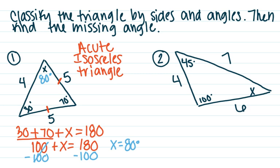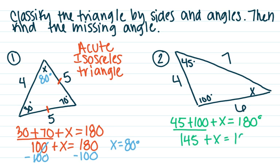Let's take a look at number two. I'm going to solve for the missing angle first again. I have 45 plus 100 plus x, and all three of those angles together are supposed to equal 180 degrees. Adding the two angles I have gives me 145 plus x equals 180 degrees. I solve this by subtracting 145 from both sides to undo the addition, and I get x equals 35 degrees.